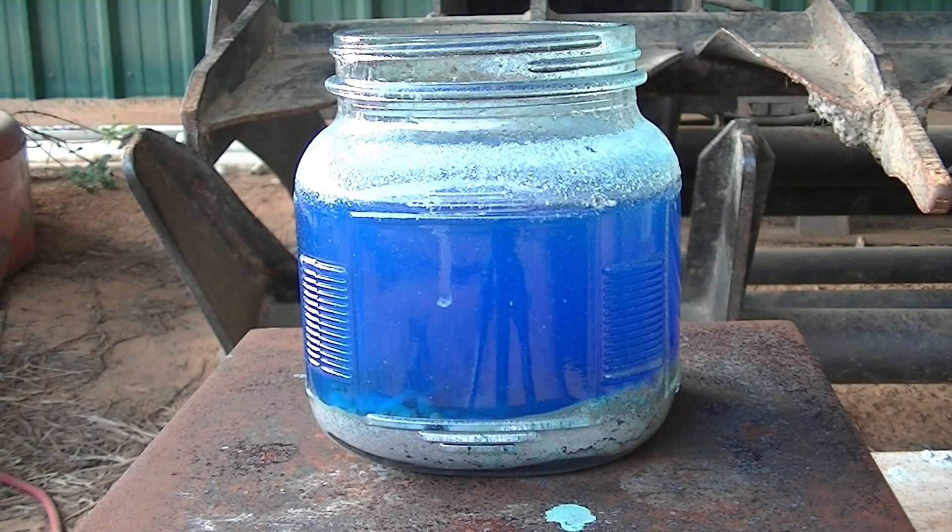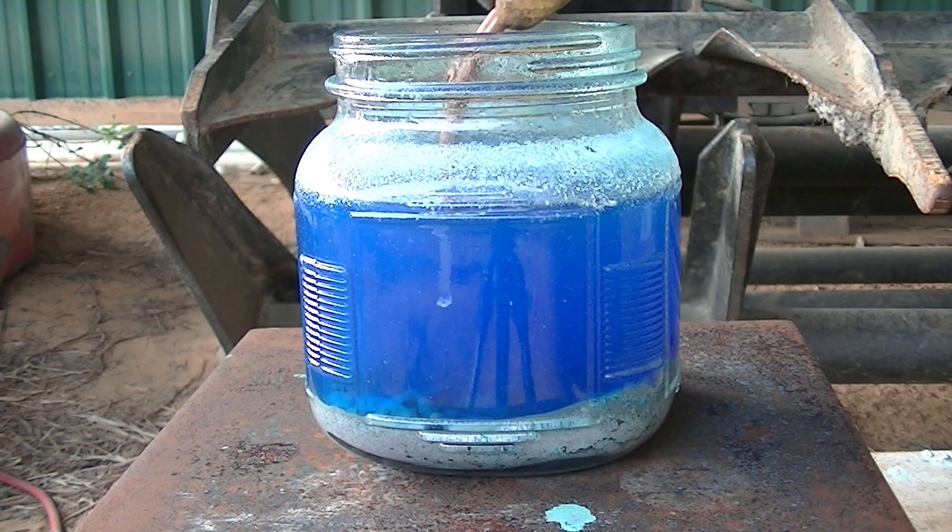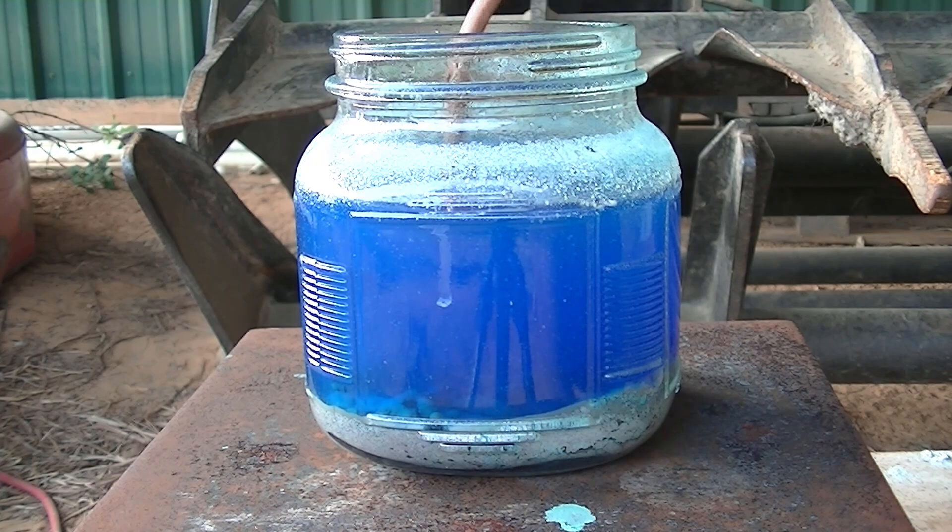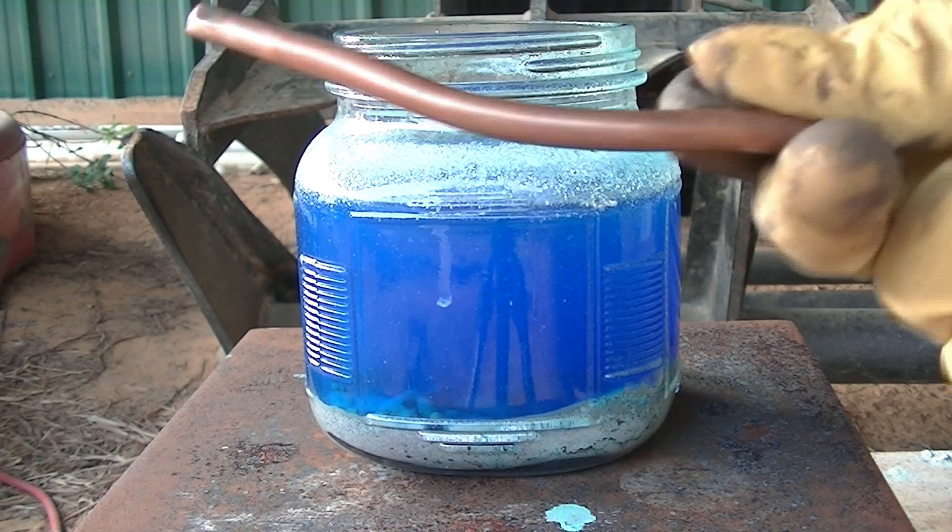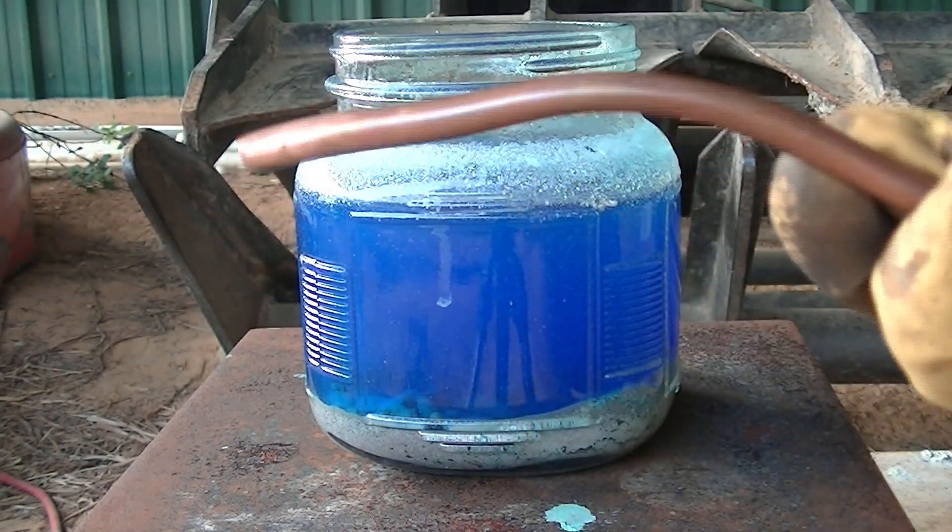You can see here the silver has precipitated out of solution. I'm going to demonstrate this by putting another copper tube in there and when I take it out, no silver will be on it. This is how we know that the reaction is done.